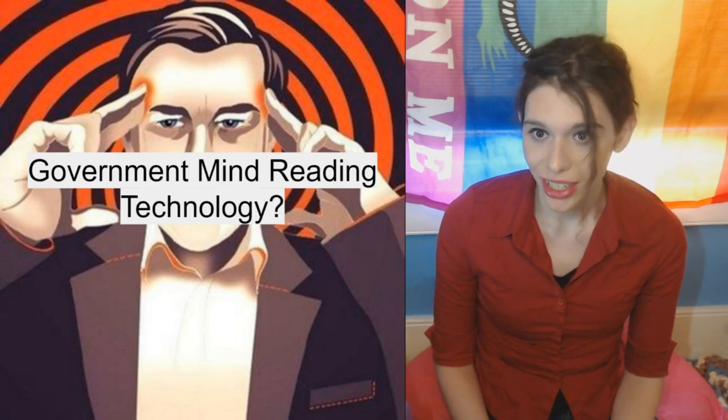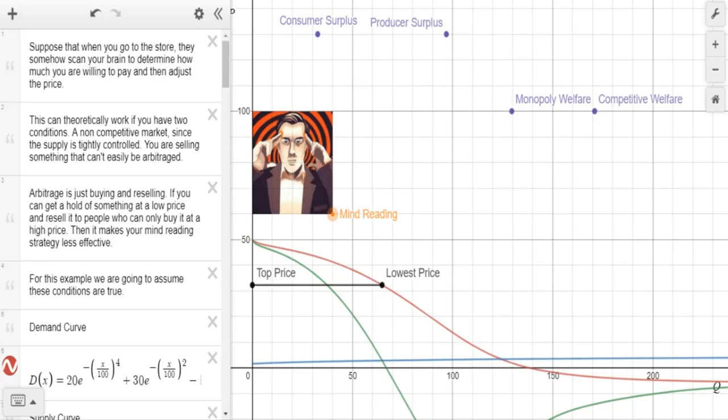But remember, video notes are in the description. So right here we are in Desmos. Suppose that when you go to the store, they somehow scan your brain and determine how much you're willing to pay, then adjust the price. This can theoretically work if you have two conditions: a non-competitive market, since the supply is tightly controlled, and you're selling something that can't easily be arbitraged. Arbitrage is just buying and reselling.